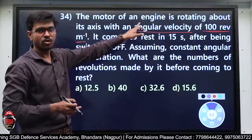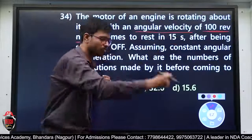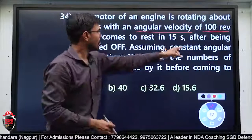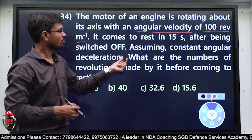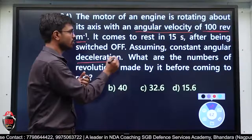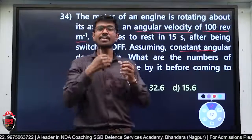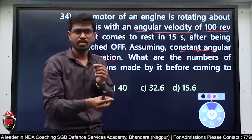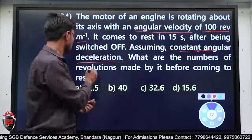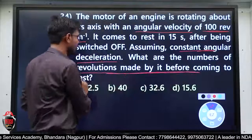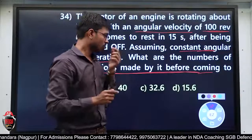It comes to rest — मतलब initial angular velocity 2πn दिया हुआ है, and it comes to rest in 15 seconds। Final velocity कितनी हो गई — 0। Switch off कर दिया। Assuming constant angular deceleration — angular deceleration है, retardation है, तो alpha मेरा minus होगा। Rest आने से पहले कितने revolution complete किये — यह निकालना है।